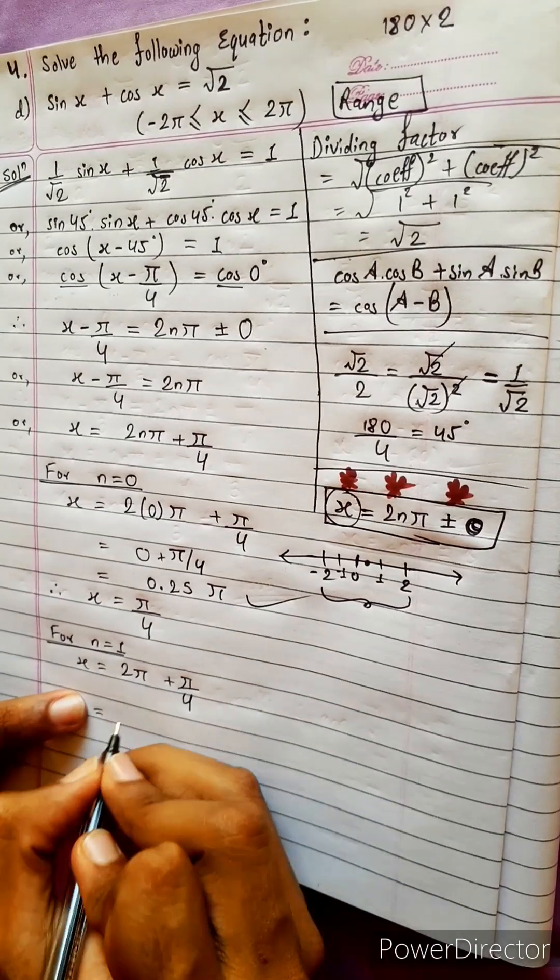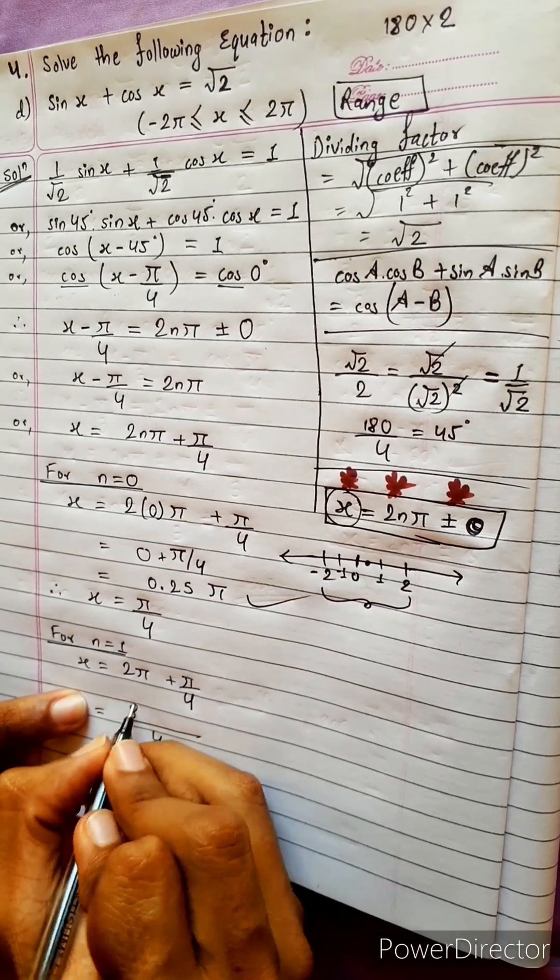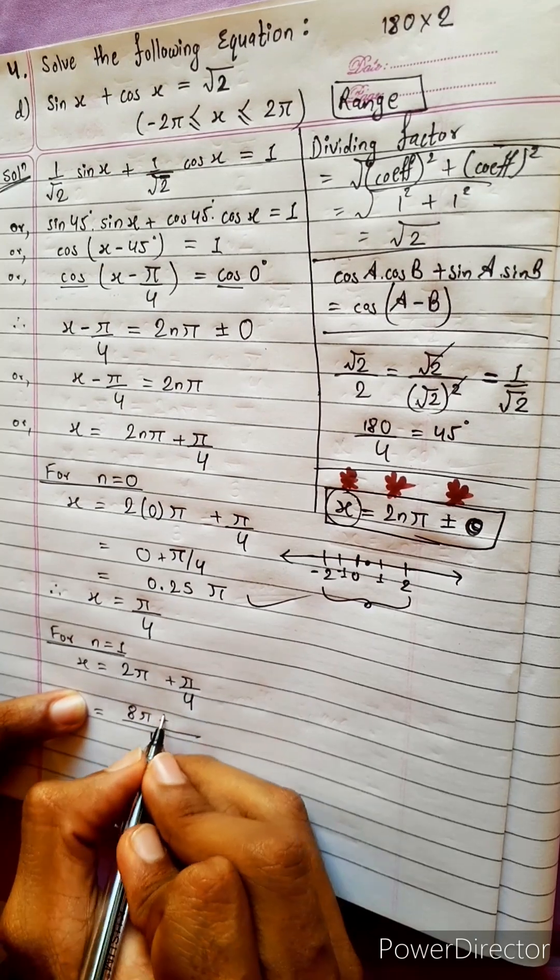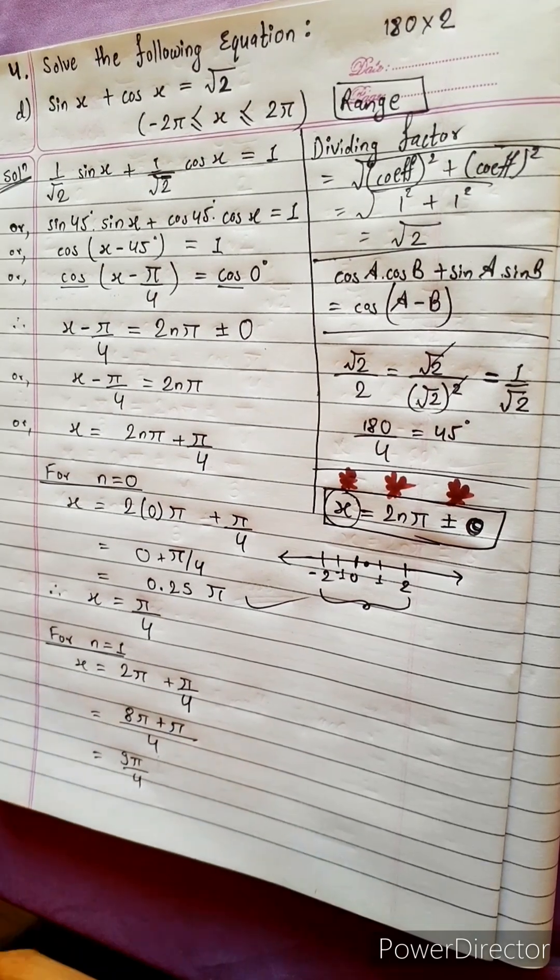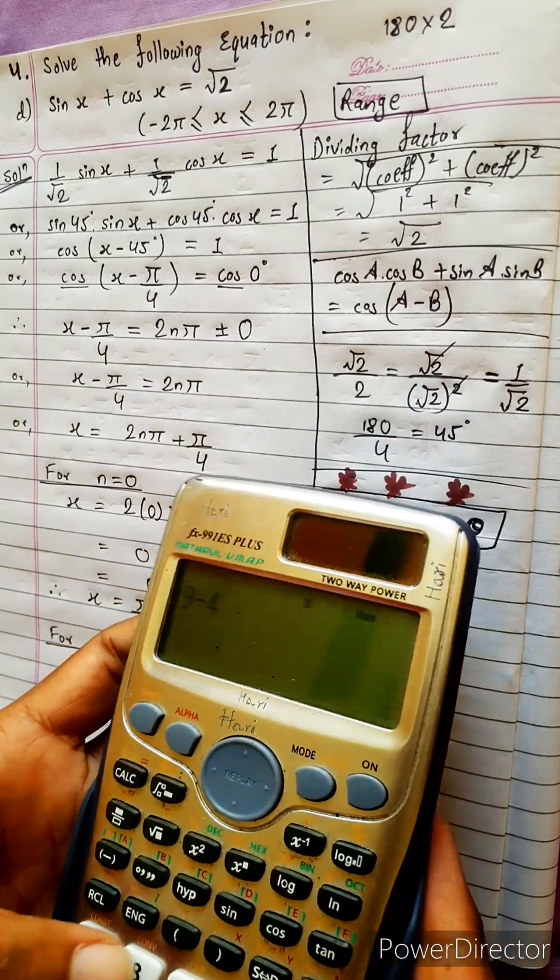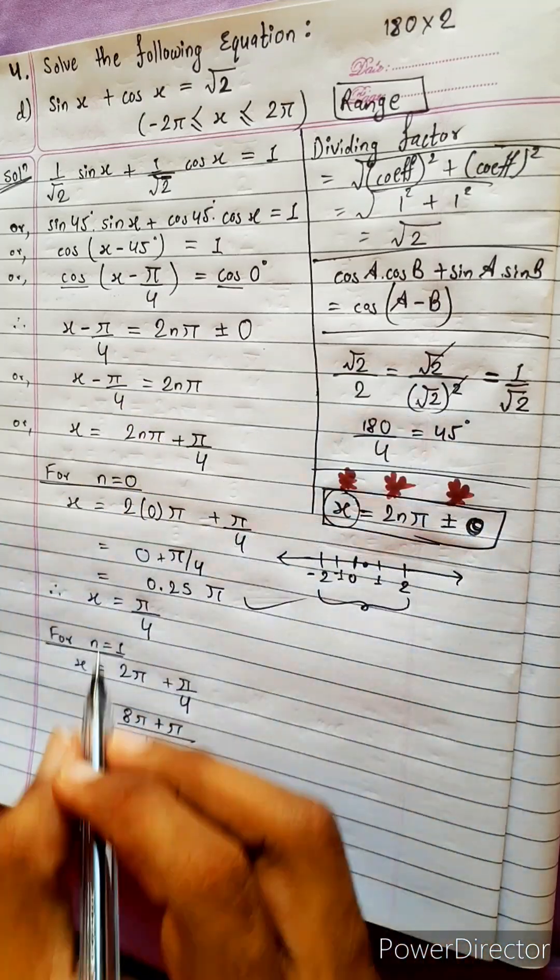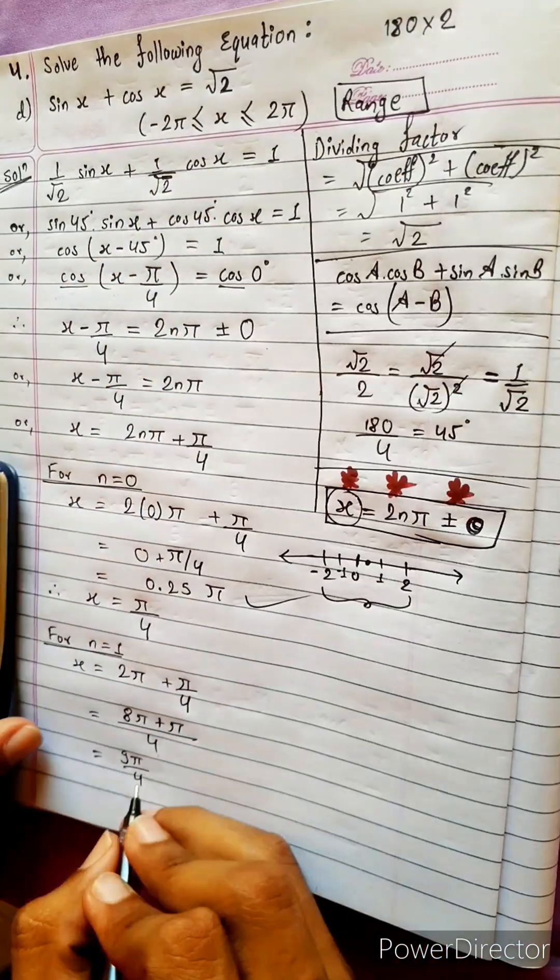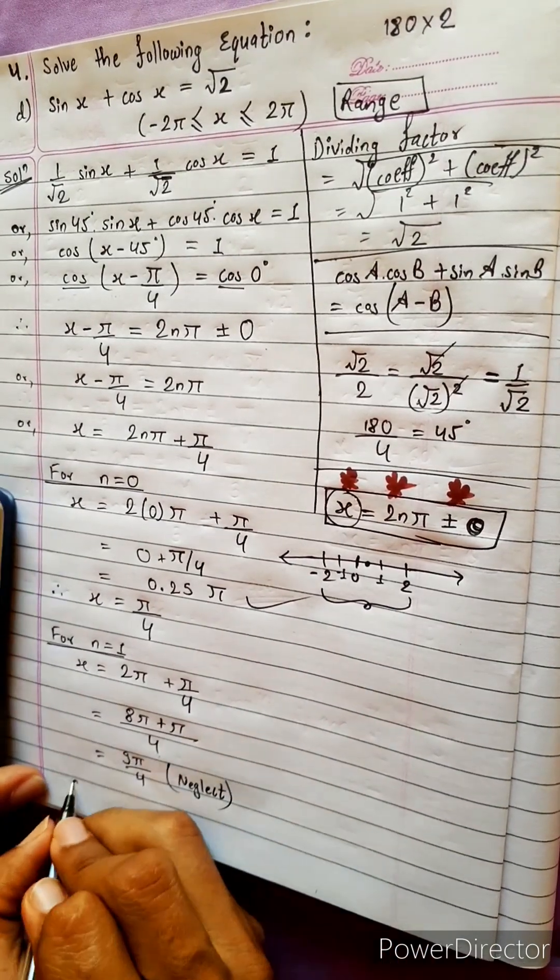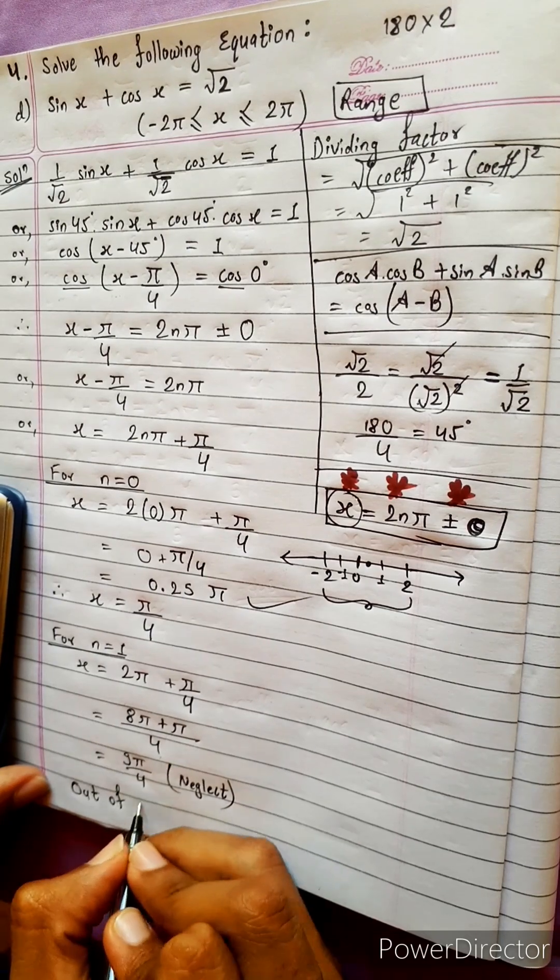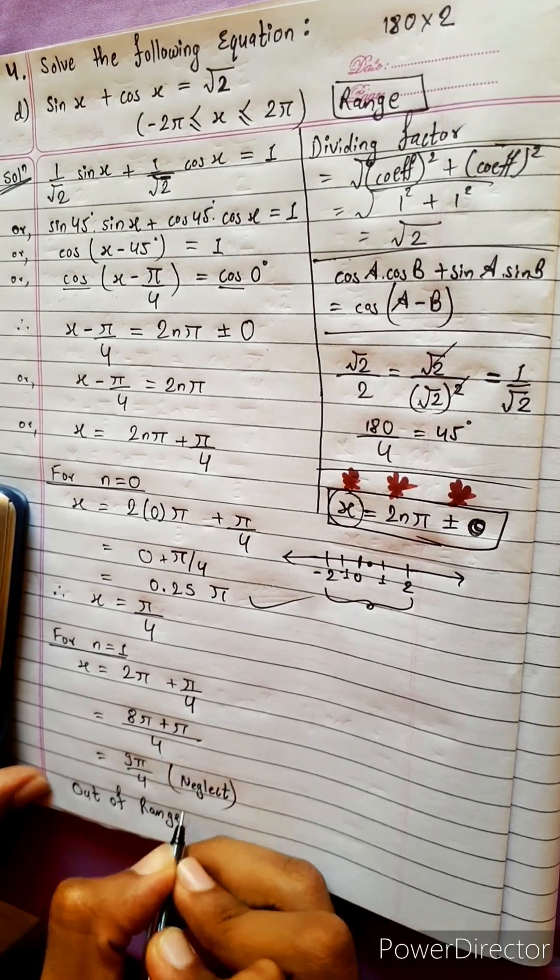And here is the range. We will get here 8 pi plus pi, yes, it is 9 pi by 4. How much is 9 by 4? 9 by 4 means 2, 2.25. It is greater than plus 2. So this neglect. Either neglect or you write out of range, same thing. Out of range. Let's write out of range.